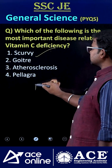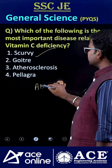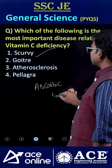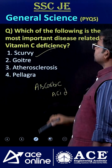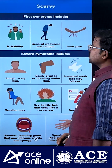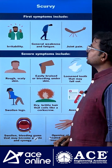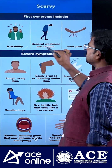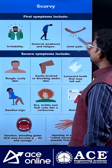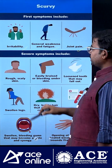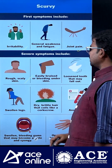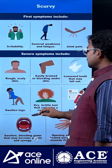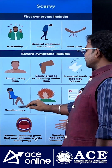Vitamin C is chemically called ascorbic acid. The deficiency of vitamin C causes scurvy. The symptoms include irritability, general weakness and fatigue, joint pains, and rough skin.